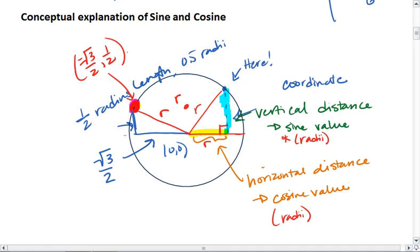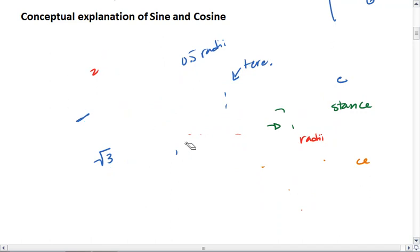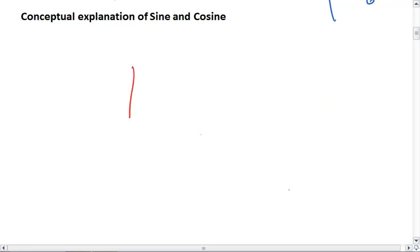Okay, so what this boils down to, and yes, I'm going to erase the screen now, is that every position on a circle - nope, I want the circle, there we go - can be determined by an ordered pair x, y.